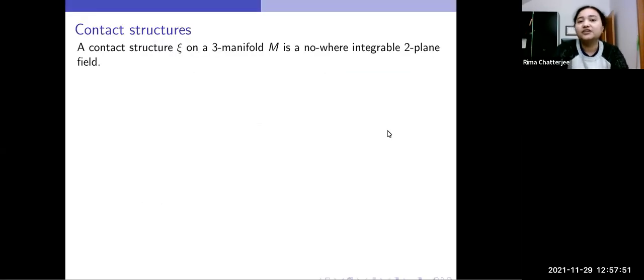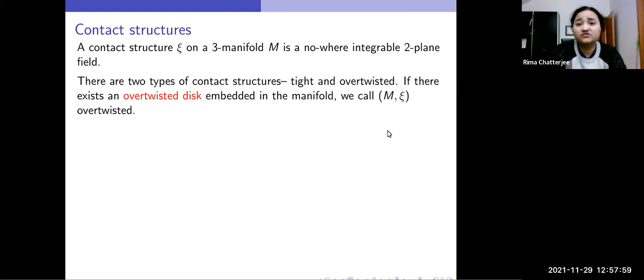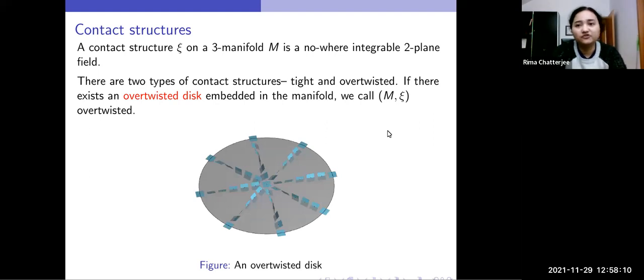So I'll start by defining a contact structure. A contact structure on a 3-manifold M is a nowhere integrable 2-plane field. There are two types of contact structures, tight and overtwisted. If there exists an overtwisted disc embedded in the manifold, we call it overtwisted. And here is a picture of an overtwisted disc.